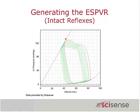In my own thinking, I tend to keep these pretty much the same. The maximal elastance is if you were to take a single loop and draw a point from that single loop down to the x-axis — that would be the maximal elastance for that particular loop.